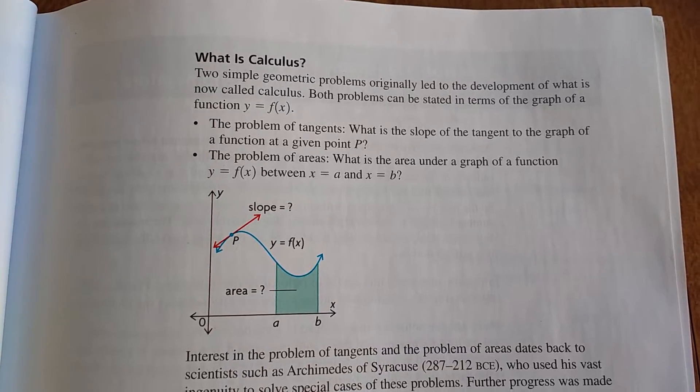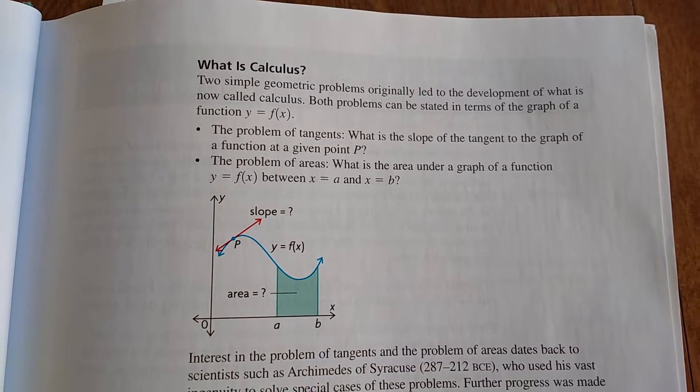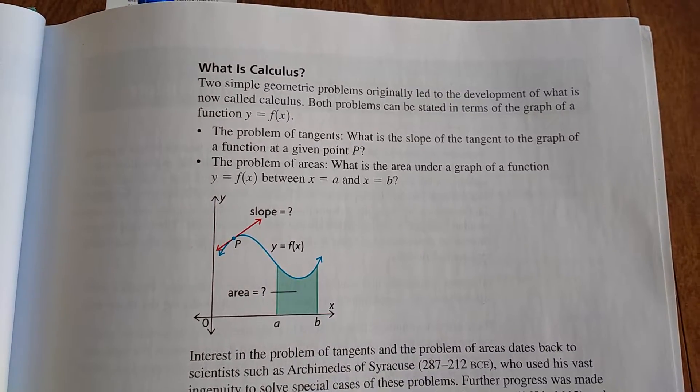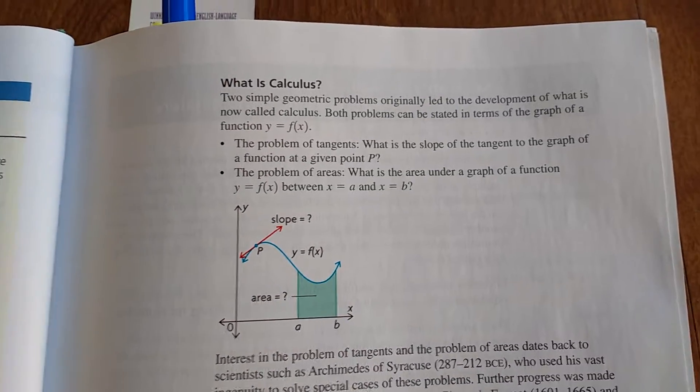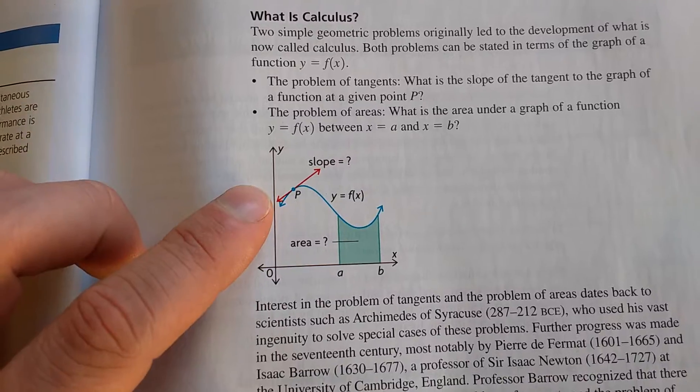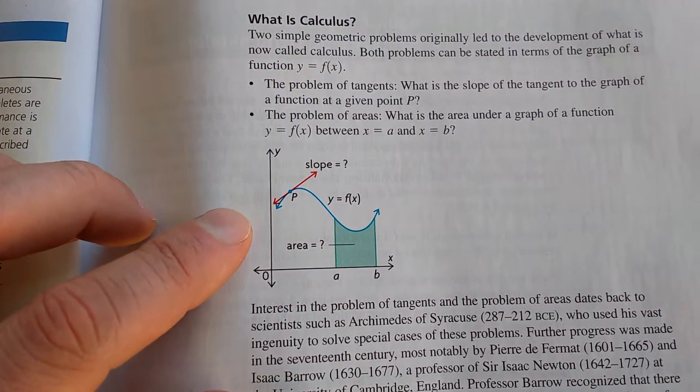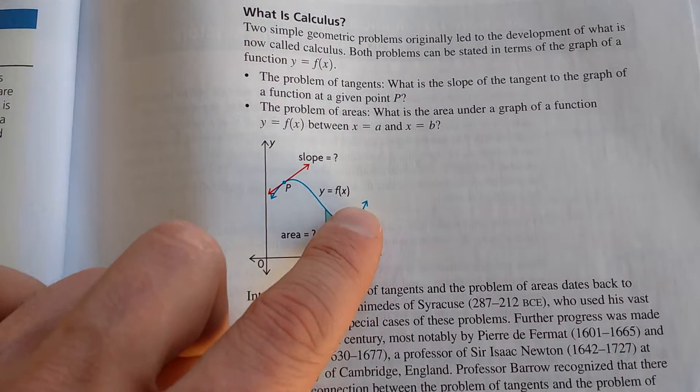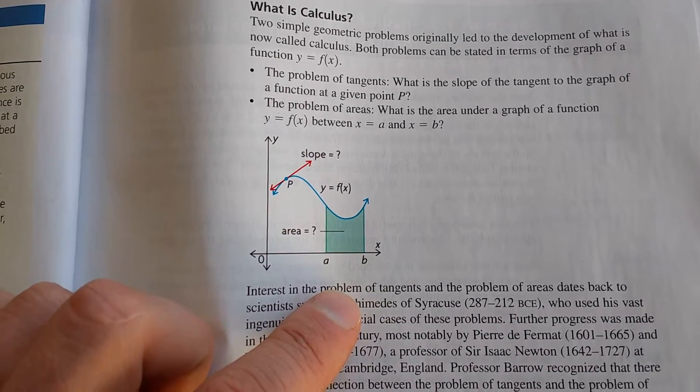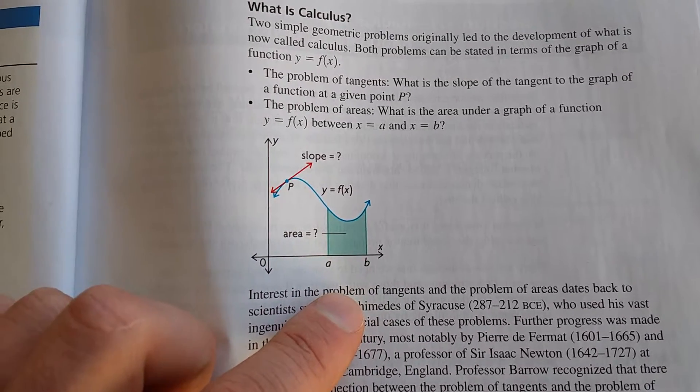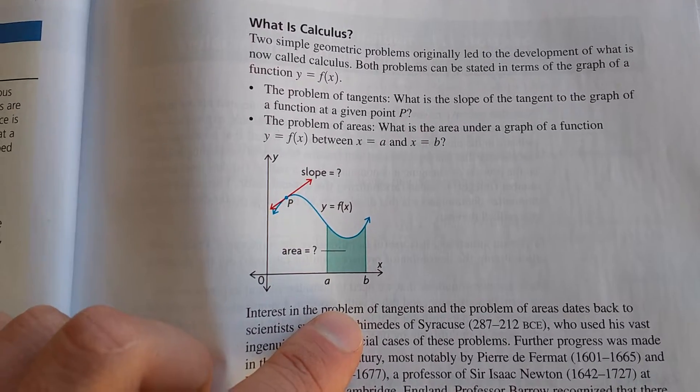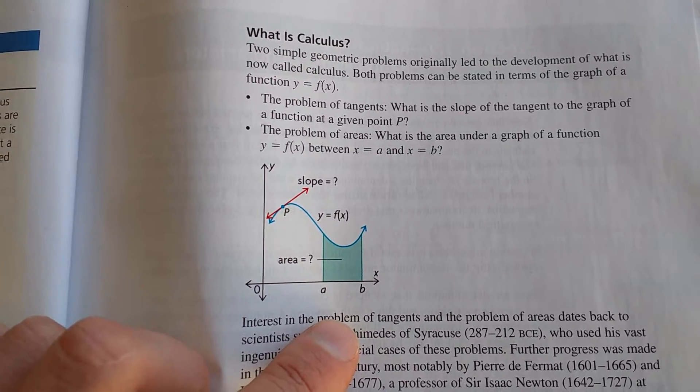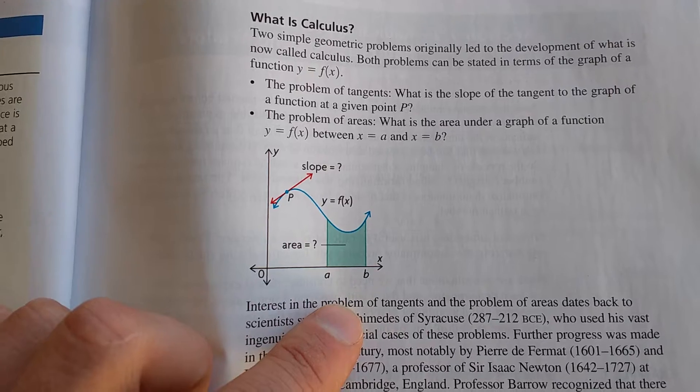So there's two points here, and it states that calculus is the problem of tangents and the problem of areas. So if we look at this little diagram here, the red line here is a tangent, and the green area underneath the curve is an area under a curve. And that's what we're trying to find with calculus. Those are the two fundamental things that are related, and those are the things that we're trying to find.